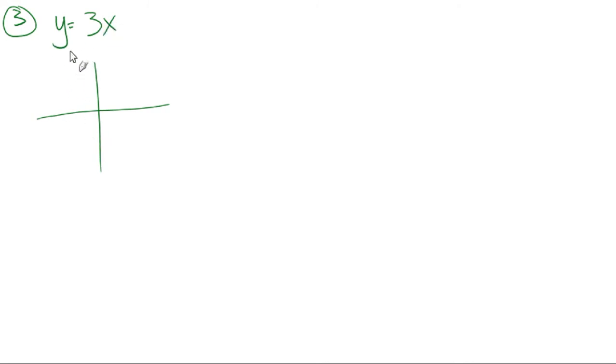y equals 3x, this is in slope intercept form. Basically if it's solved for y, if y is by itself on one side and everything over on the other side, and you have a number times x plus another number, we could put 0 here, then it's in slope intercept form. This would be the slope, this is m, the slope, and this is b, the y intercept. So the y intercept is 0, it's right there. The slope is 3 or 3 over 1, which means we go up 3 and over 1. And there we have our line.